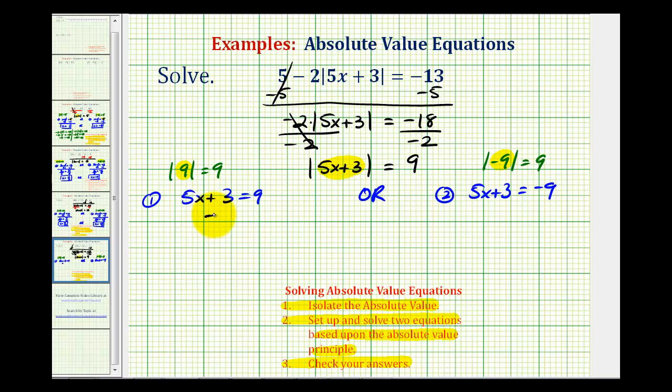Now we'll solve these two equations. We'll subtract 3 on both sides, so we have 5x equals 6. Divide both sides by 5, so x equals 6 fifths.